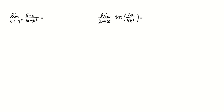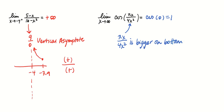Here are two more practice problems. For the first, you plug in and see a vertical asymptote; checking a nearby point gives a positive value, so the answer is positive infinity. For the second, the argument of cosine is a fraction x over x squared, and as x approaches infinity, x over x squared is bigger on the bottom — so that fraction goes to 0. We're getting closer and closer to taking cosine of 0, and cosine of 0 is 1. So that limit equals 1.